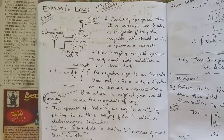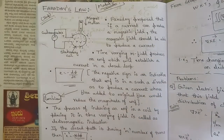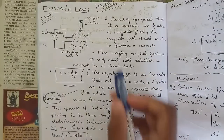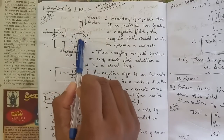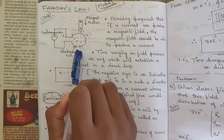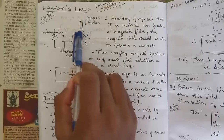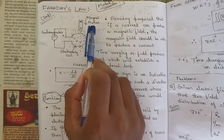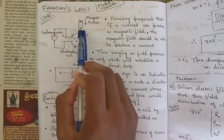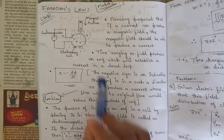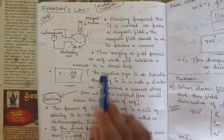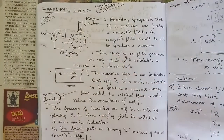Faraday's law is basically the relationship between the electric field intensity and magnetic field. Before starting, let's analyze this figure: there is a galvanometer along with a stationary coil which has a current flowing through it, and just above the stationary coil we have placed a magnet with north and south poles. The magnetic fields from the south pole are going through the stationary coil in a particular direction.